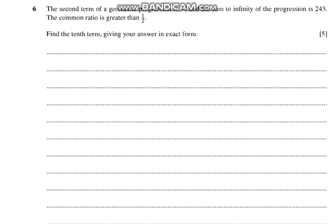Question number 6 says that the second term of a geometric progression is 54. So that means 54 equals ar^(2-1), which is ar. And the sum to infinity of the progression is 243. So a over (1 - r) equals 243. That's our equation number 2. You can write this equation as a equals (1 - r) times 243.